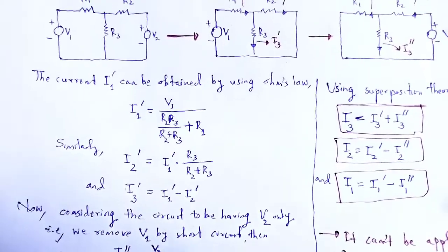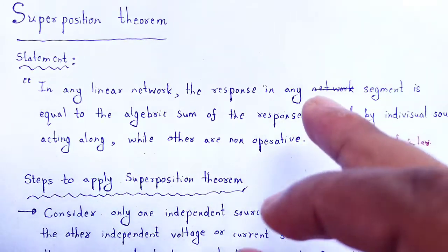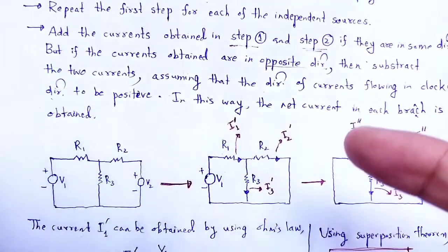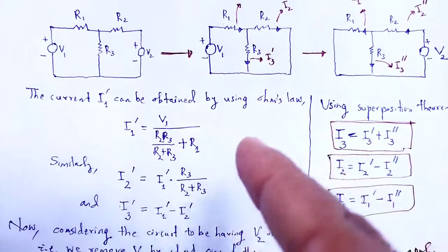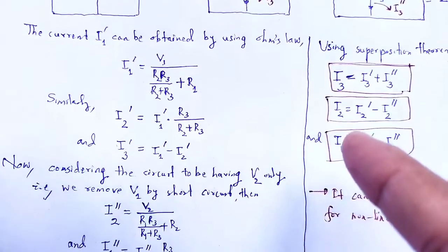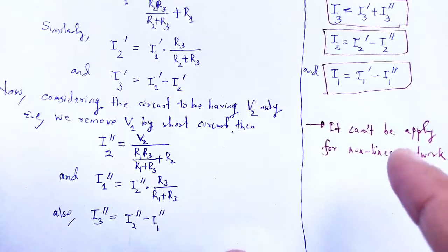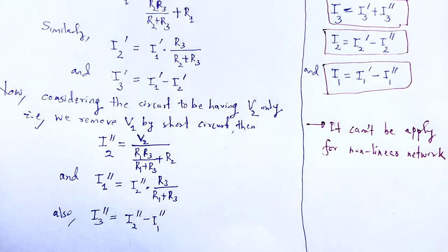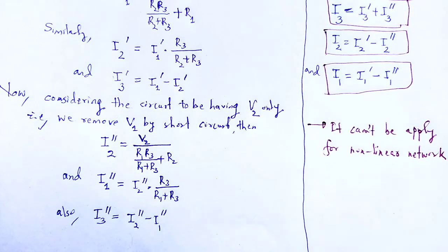With the help of this video lecture, you understand one of the network theorems — the superposition theorem — its statement, and how we apply it. We looked at an electrical network and used the superposition theorem to calculate the respective currents through the branches. An important point: you cannot apply superposition theorem to a non-linear network. With these useful and informative notes, let me wind up the session. Thank you.